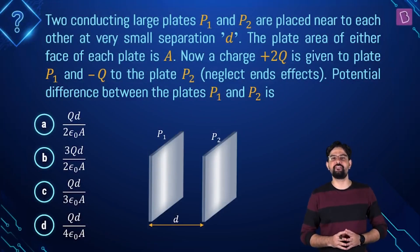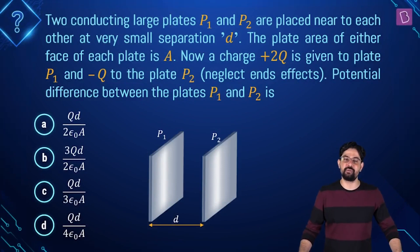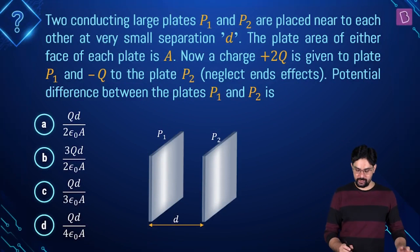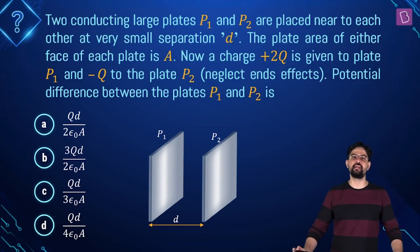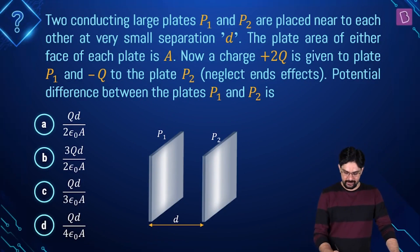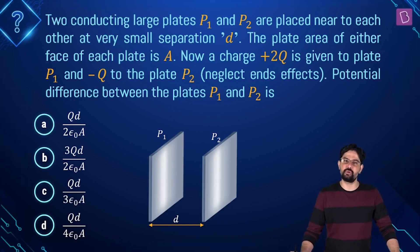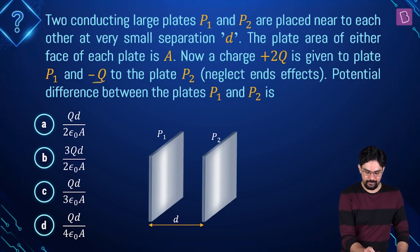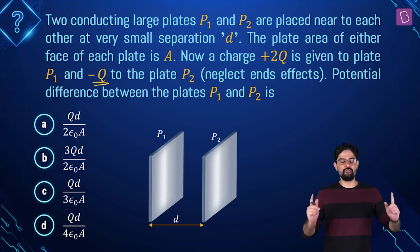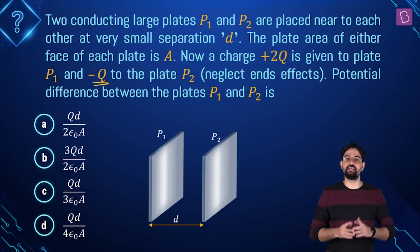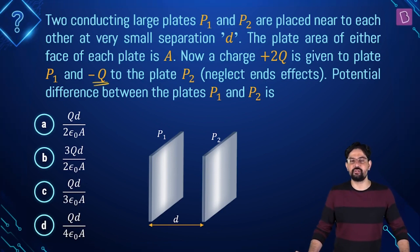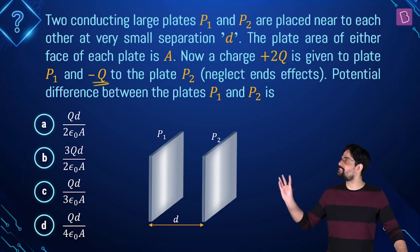According to this problem, you have two large conducting plates P1 and P2 placed near each other at a separation D. P1 is given a charge of plus 2q and plate P2 is provided with a charge of minus q. You have to find out the potential difference between these plates P1 and P2 and choose the right option.